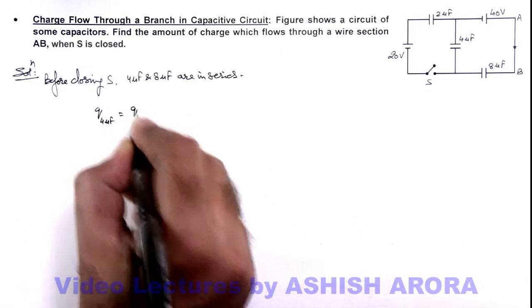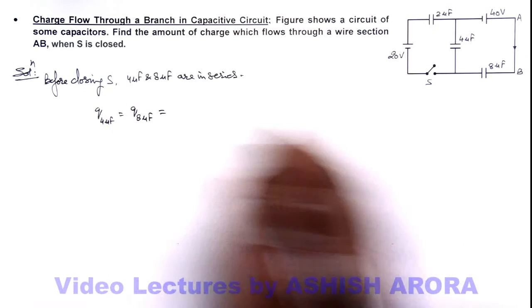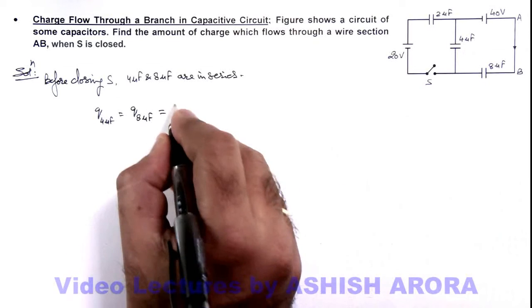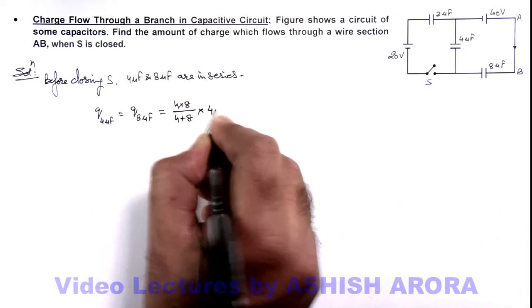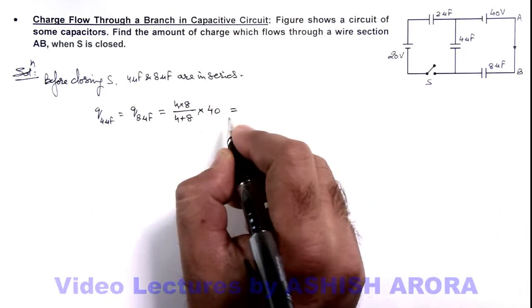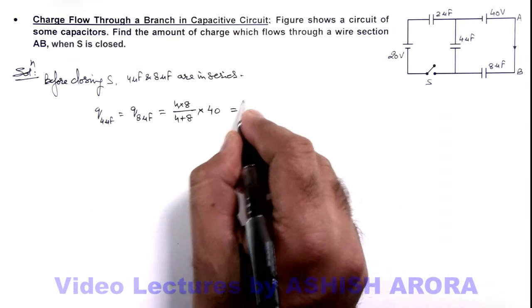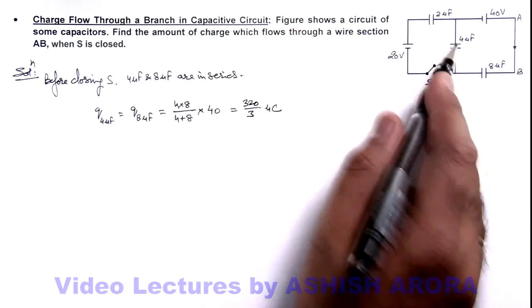Which is across a 40-volt battery. So we can directly write the charge on 4 microfarad will equal the charge on 8 microfarad, as these two are in series. This will be C_equivalent multiplied by V, that is (4×8)/(4+8) multiplied by 40. So we are getting 320/3 microcoulombs, which is the charge on both capacitors.